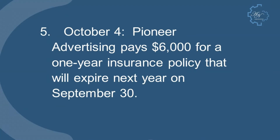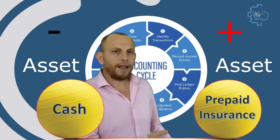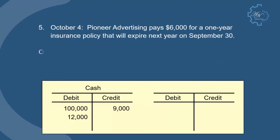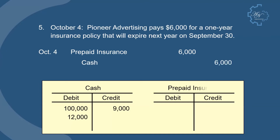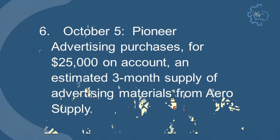October 4: Pioneer Advertising pays $6,000 for a one-year insurance policy that will expire next year on September 30. We have prepaid insurance — an asset — and cash. Prepaid insurance increases, cash decreases. The entry is: debit prepaid insurance, credit cash. The posting looks like this.